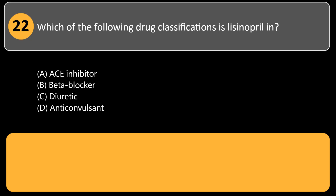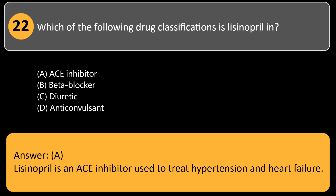Which drug classification is lisinopril in? A) ACE inhibitor, B) beta blocker, C) diuretic, D) anticonvulsant. Answer: A. Lisinopril is an ACE inhibitor used to treat hypertension and heart failure.